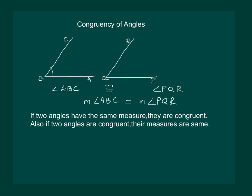Hence, we can say that if two angles have the same measure, then they are congruent, and also if two angles are congruent, then their measures are same. That would mean that if angle ABC is 40 degrees, then angle PQR is also 40 degrees, since angle ABC is congruent to angle PQR.